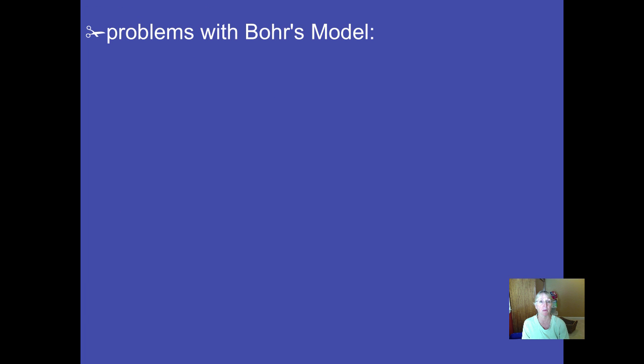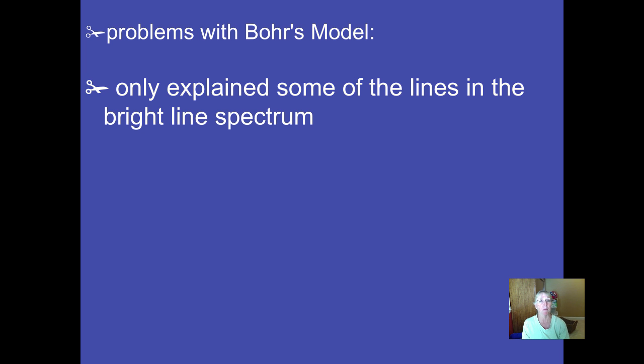Now there were some problems with his model. Bohr solved the problem of Rutherford's model by saying if atoms' electrons can only occupy specific energy levels, then that took care of the death spiral into the nucleus problem with the Rutherford model. Bohr's model worked pretty well for hydrogen, which only had one electron. But it only explains some of the lines in other elements that have more than one electron's bright line spectra.